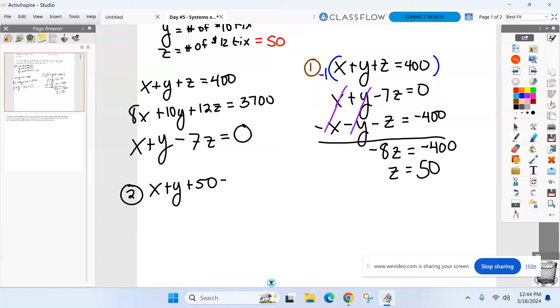This first one: X plus Y plus 50 equals 400. What do you guys want to do there? Subtract it over, right? So I get X plus Y equals 350.